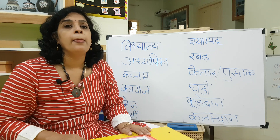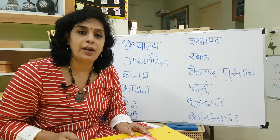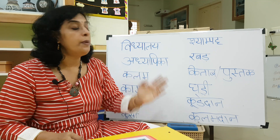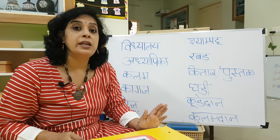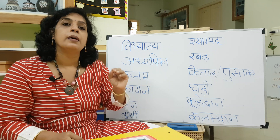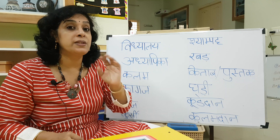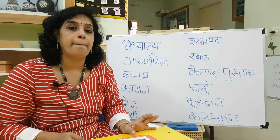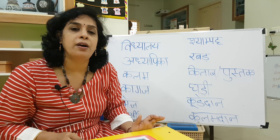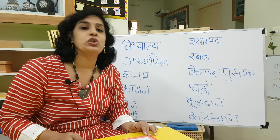Next one is about book. Book is something you use very commonly in the classroom. A book you can either call Kitab or Pustak. You would have heard Pustak before — like Karya Pustika, Abhyas Pustika. Kitab is also called a book. I leave it to you — Pustak or Kitab, your choice.